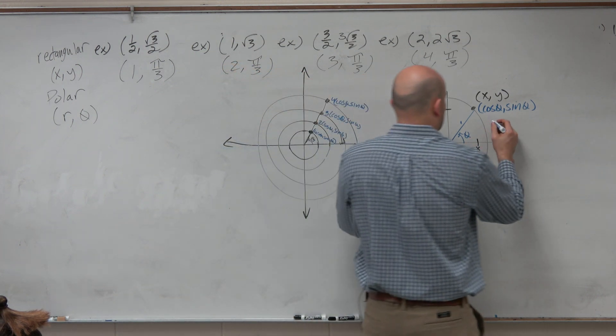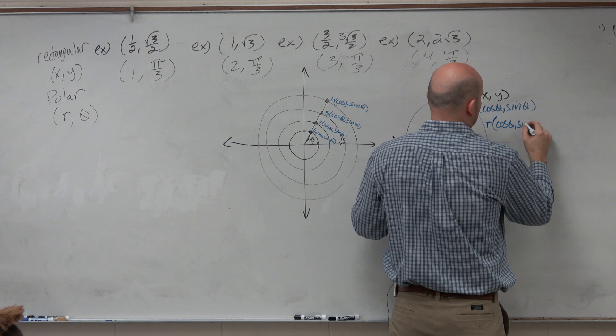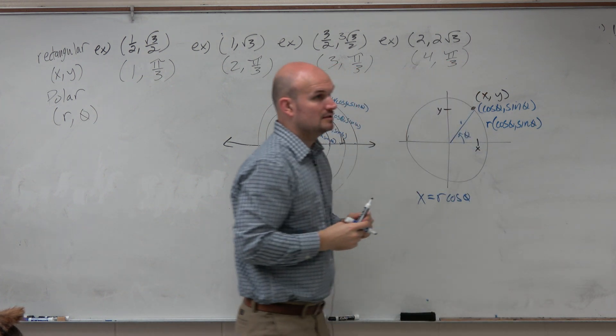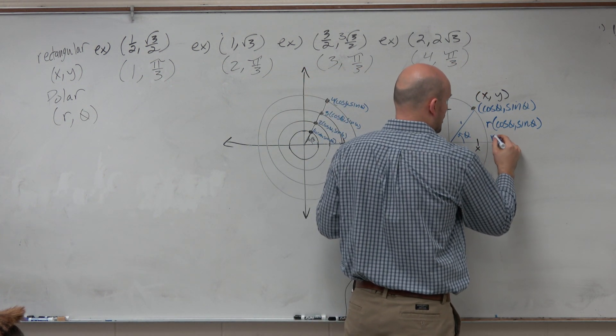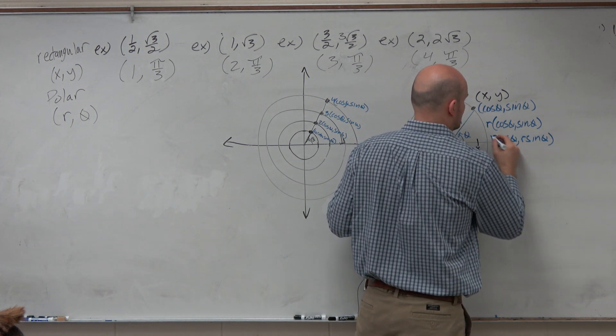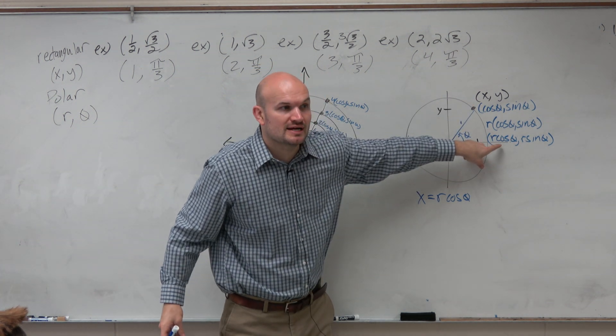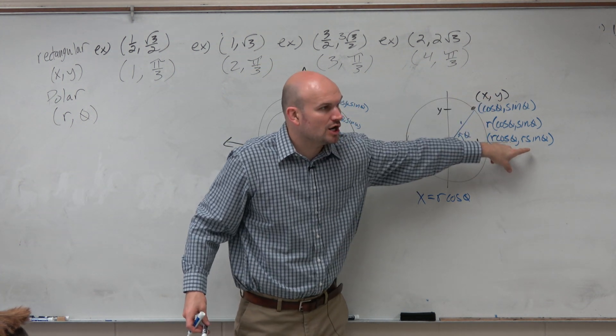Or put it like this: r(cos θ, sin θ). You can distribute that to get (r cos θ, r sin θ). So x = r cos θ and y = r sin θ.